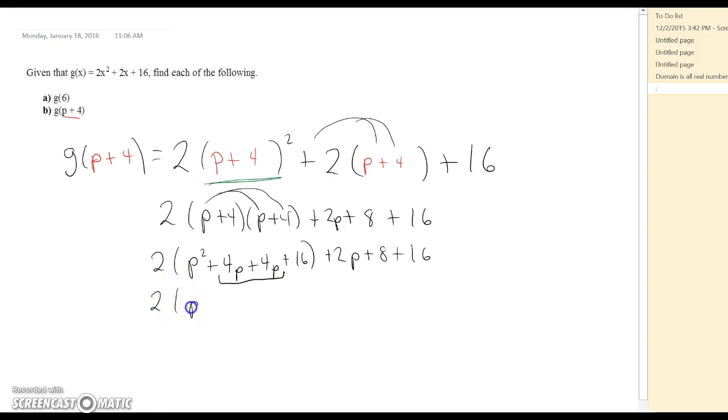So it's going to be 2P squared plus 8P plus 16 and then plus 2P. And then I guess we can put this 8 and 16 together to get it. So then 8 plus 16 is 24. So we have a plus 24 out here.